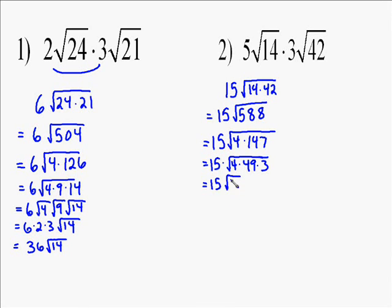3 can't be factored anymore, so we have square root of 4 times square root of 49 times square root of 3. Square root of 4 is 2 and square root of 49 is 7, so we get 15 times 2 times 7, which equals 210. The final answer is 210 times the square root of 3.